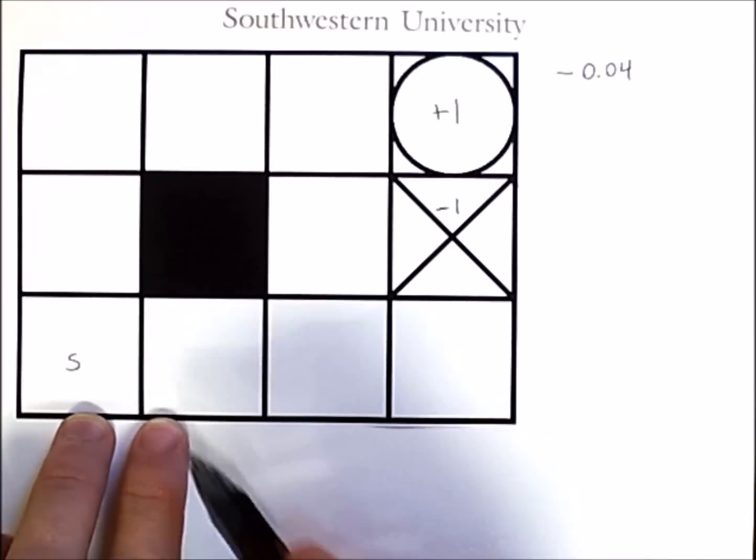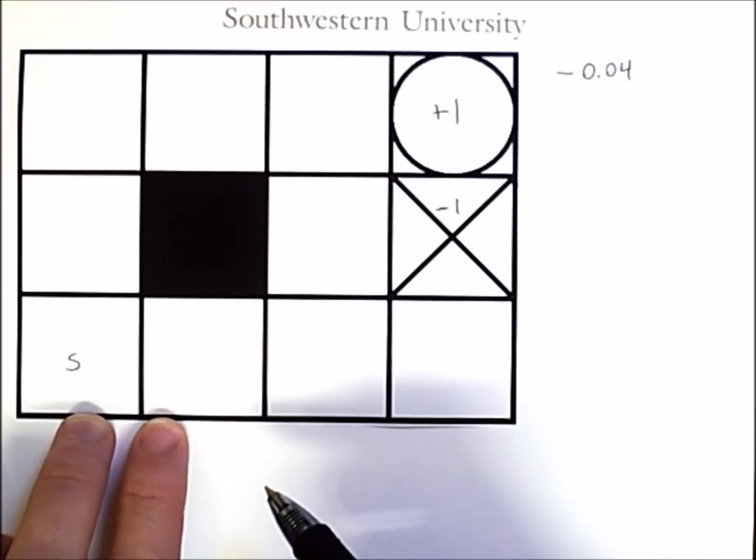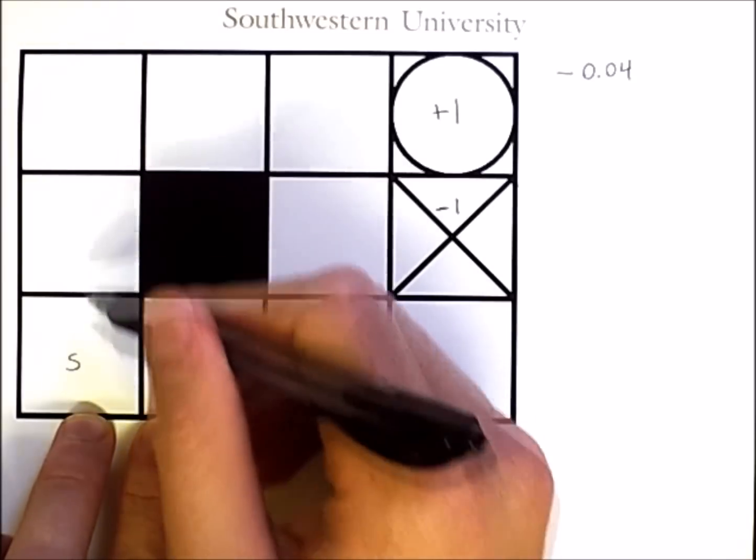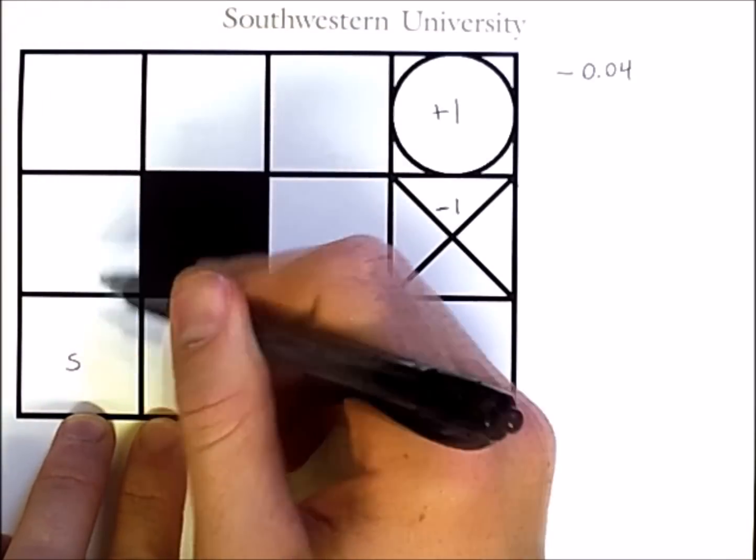So, the agent can move up, down, left, or right, but only reliably 80% of the time. That means that if the agent chooses to move up, 80% of the time it will move up.